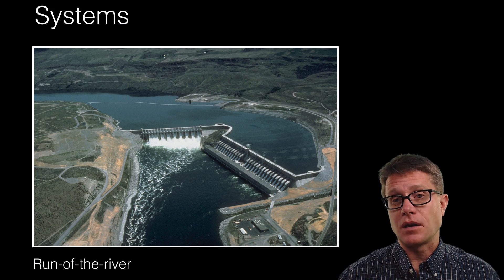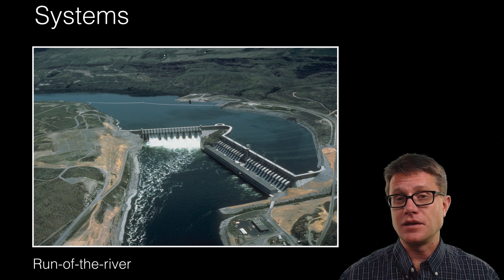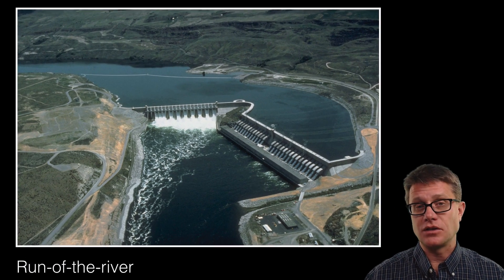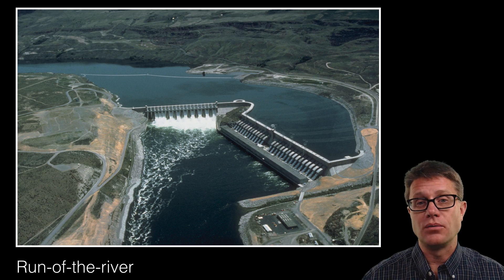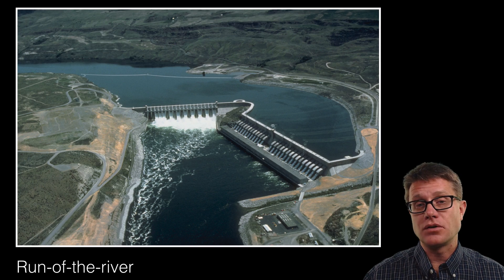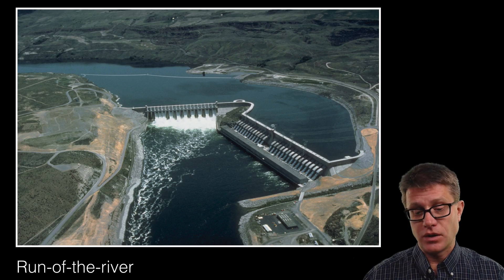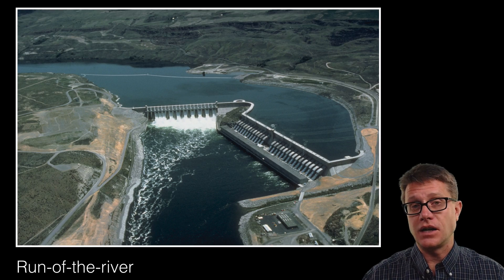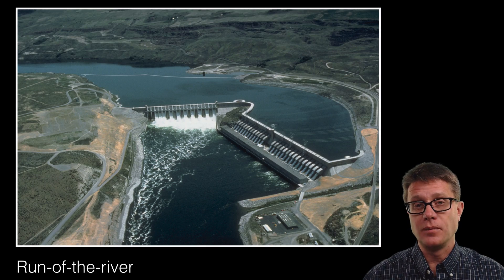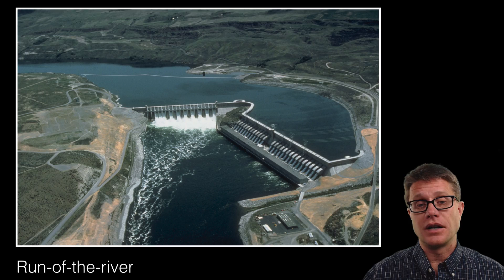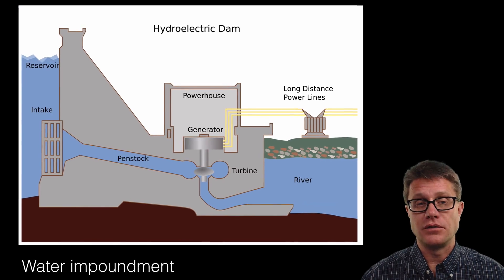The first type I want to talk about is the run of the river system. This is not a dam — it looks like a dam, but it is just a very wide river. As the water runs through it, it is generating electricity. One nice thing about this is we are not going to have that siltation problem. The downside is that it is only going to be generating electricity when the water is actually flowing.